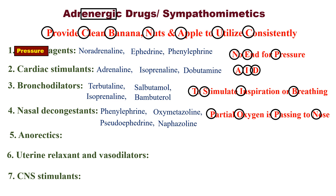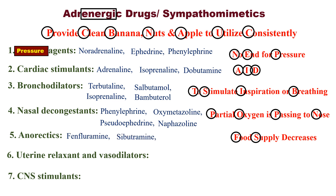Number five: Anorectics — these are the agents which reduce hunger or appetite and decrease food consumption. When you see the word anorectics, remember 'Food Supply Decreases': F for Fenfluramine, S for Sibutramine, and D for Dexfenfluramine.